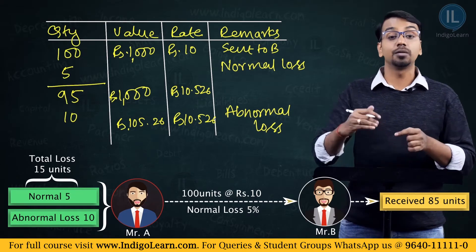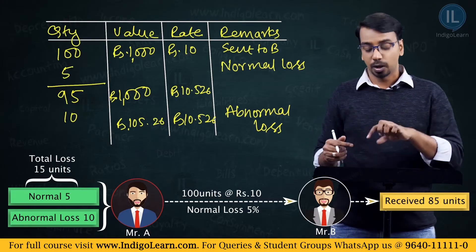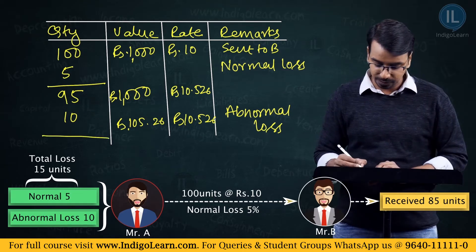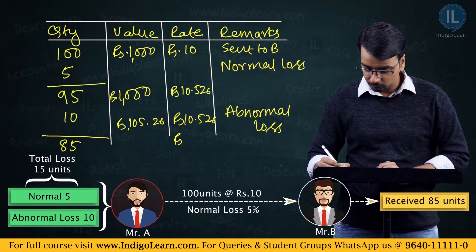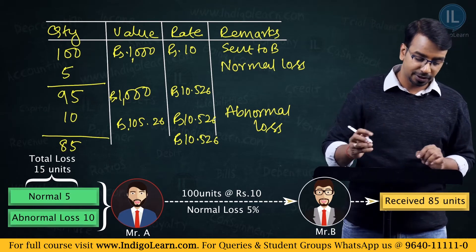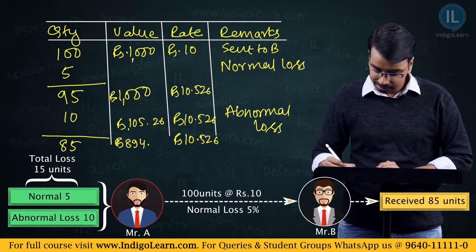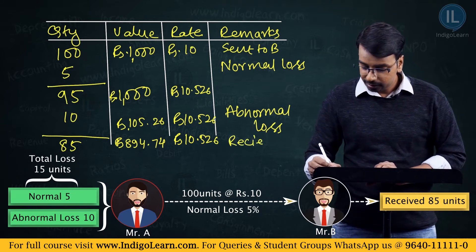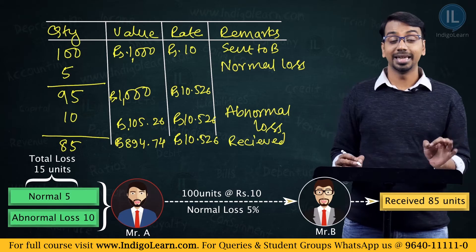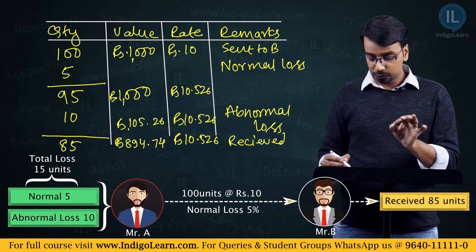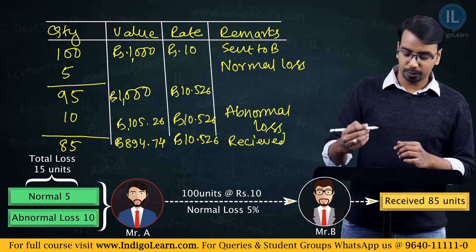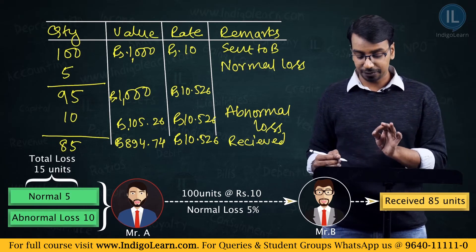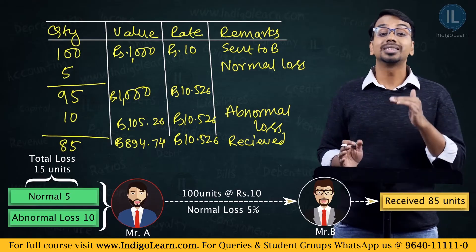Now what will happen in the consignment account? We will understand it by drawing a separate account. This loss of rupees 105.26 will be debited to the profit and loss account. The good units received are 85, at a cost of rupees 10.526 × 85 = rupees 894.74. So rupees 894.74 is what has been received by the consignee.